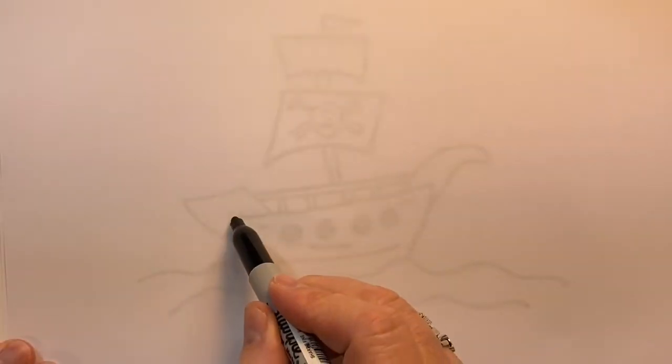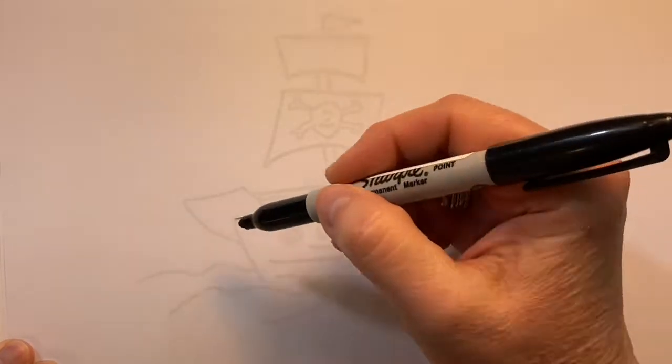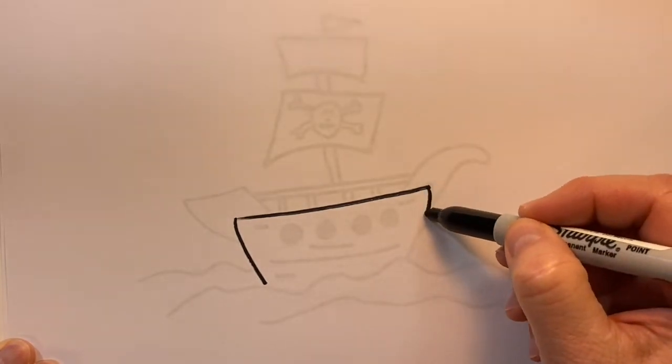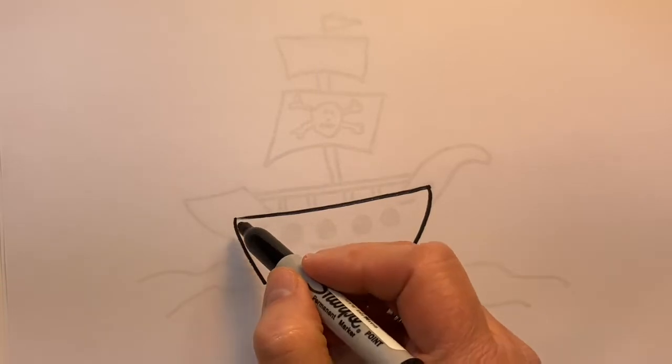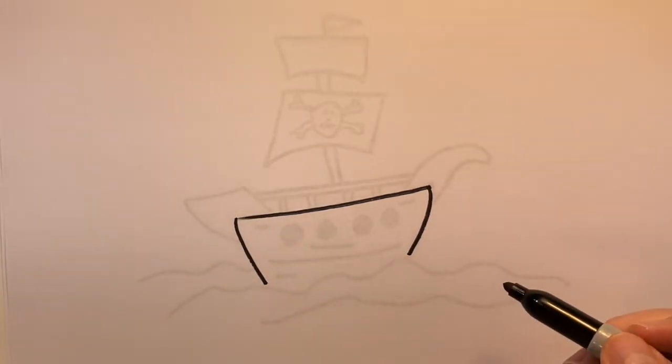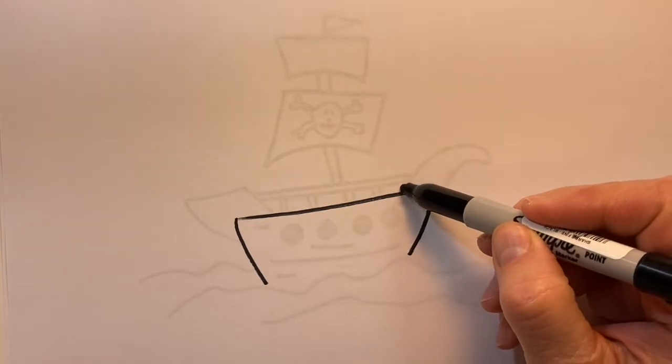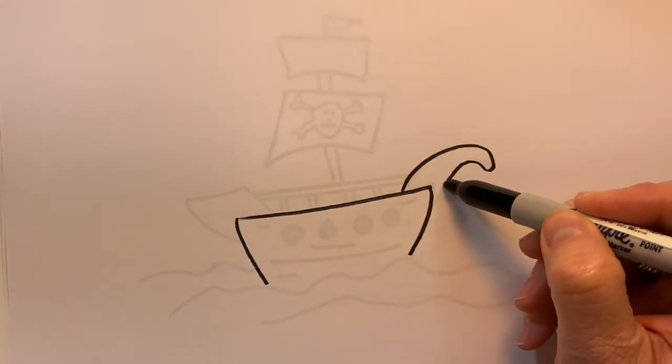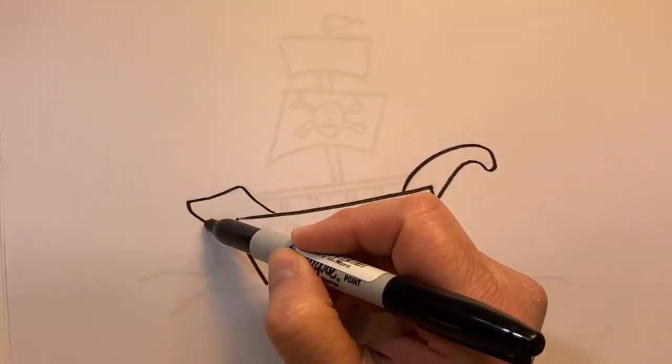Create a little bit of a slanted line for the top part of our pirate ship and then bring kind of curved lines down for the front and the back, or the bow and the stern of the pirate ship, and then curved line for the front and the back.